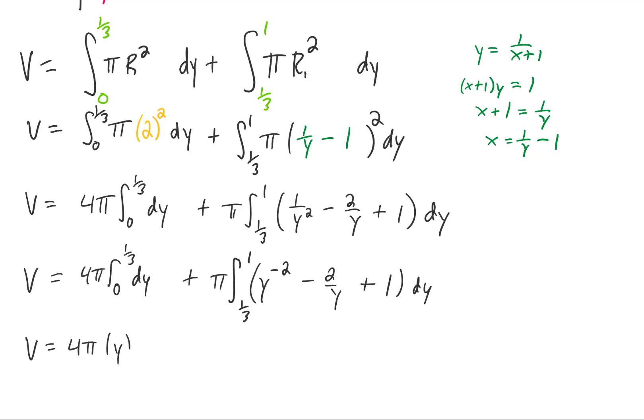Now we can actually do the integration on each of these pieces. The integral of y to the negative two is just negative y to the negative first power, or negative one over y. The integral of two over y is two times the natural log of y, and the integral of one is y.